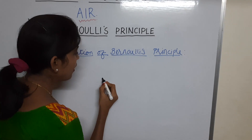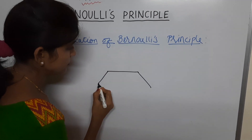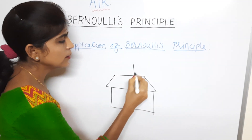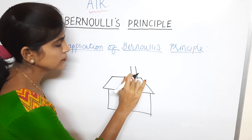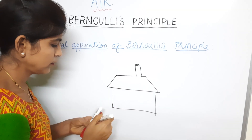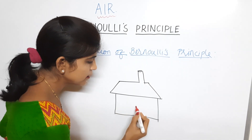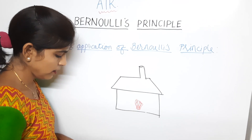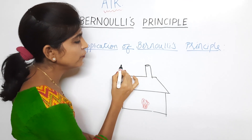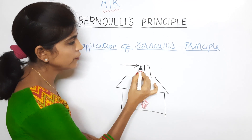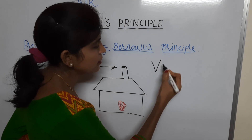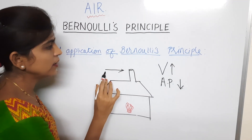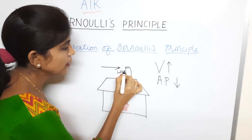Suppose this is your house, or let's say it's a factory for any industry, and it has a chimney over it. Whenever there is fire, there will be smoke, and we will see how the smoke goes through the chimney. Whenever the wind blows, we have learned through Bernoulli that whenever the velocity of air increases, its air pressure decreases. So when the velocity of the wind increases, the air pressure will be low at the opening of the chimney.